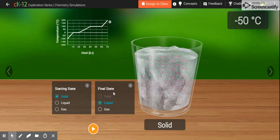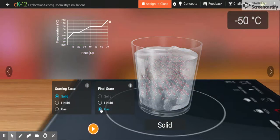And then finally down here at the bottom we've got our starting state and final state. So what we're going to do first is we're going to start by looking at water that starts out as a solid, and we're going to heat it up until it gets all the way into a gas. So let's go ahead and look and see what that looks like.